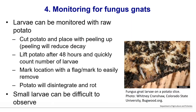Larvae can also be monitored with potato pieces placed cut-side down in the media, with the peel facing up to reduce rot. Leave them for no more than 48 hours, mark the location with a flag, then check the cut surface for larvae. Small larvae are relatively difficult to detect and will go back into the media quickly. This method can work, but sticky traps may be sufficient for most situations.